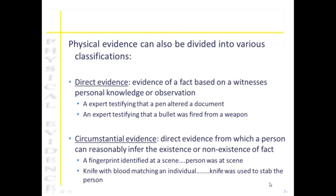Physical evidence can be divided into two main classifications: whether it's direct evidence or whether it's circumstantial evidence. Direct evidence is going to be evidence of a fact based on a witness's personal knowledge or observation. Two good examples are an expert testifying that a specific pen altered a document, or an expert testifying that a bullet was fired from a particular weapon.